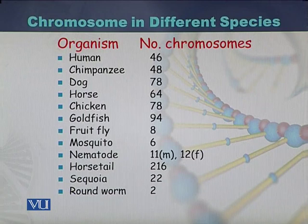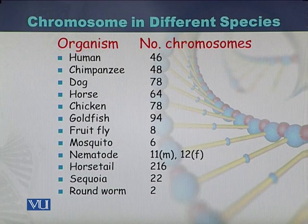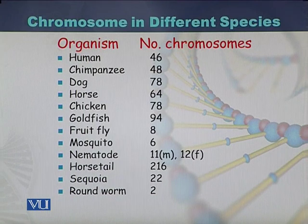Looking at chromosome numbers in different organisms: humans have 46 chromosomes, chimpanzees have 48, dogs have 78, horses have 64, chickens have 78, goldfish have 94, fruit flies have 8, and mosquitoes have 6, and so on. These are the chromosome numbers in different organisms.